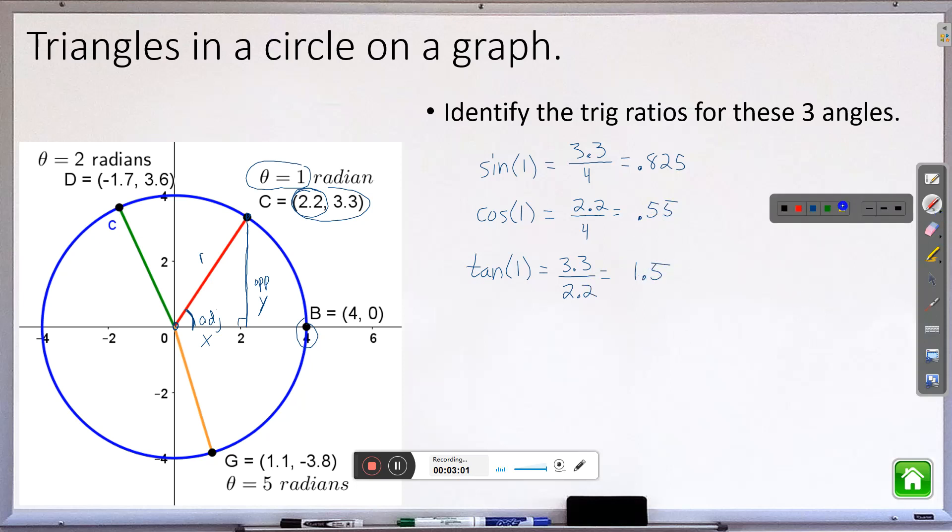Alright, let me do one more for you and I'll leave the last one as your own practice. So let's do point D, 2 radians. So this will be sine of 2 radians now. So it's our Y value, 3.6 divided by the radius, which is still 4. Cosine is our X value, which is negative 1.7 divided by 4.